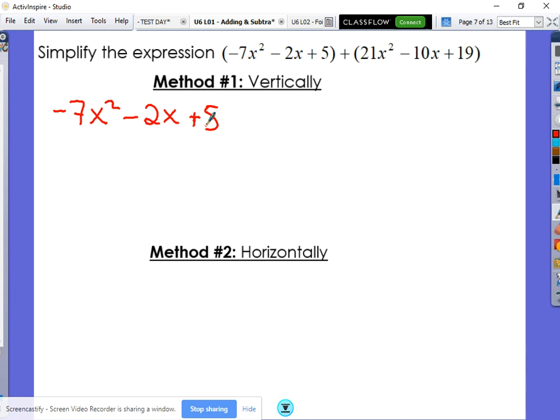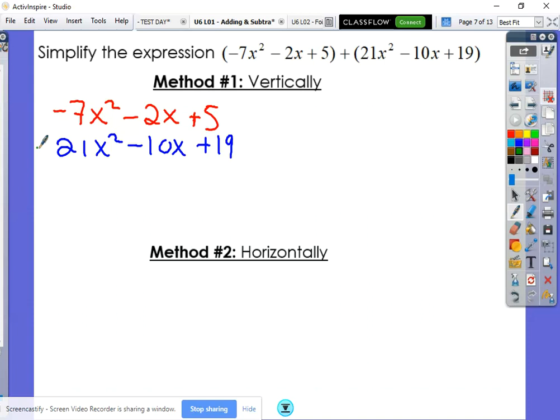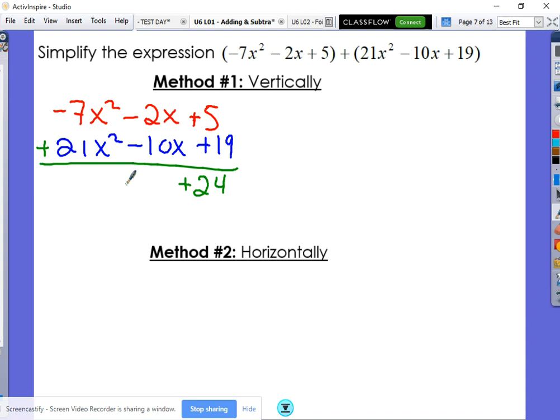So if you're using the vertical method, you should be setting it up like this. Make sure that all of your matching terms line up. So notice that my x's, my x squareds are together, my x's are together, and the constants are together. Addition all the way down. This gives us positive 24, negative 12x, and that gives us positive 14x squared. There's your answer.